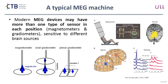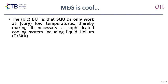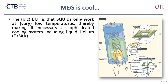A typical MEG device looks like this. We will see why we need such a large dewar. The flux goes through the SQUID producing the electric current, and a typical source produces this kind of spectrum. You will recognize features similar to EEG — the alpha peak and the beta peak. The problem is that SQUIDs need to work at very low temperatures, around 4 Kelvin, so they must be cooled by liquid helium — we can say MEG is very cool. That is why we have a big dewar where liquid helium keeps the SQUIDs at low temperature, and the subject places their head into a helmet.